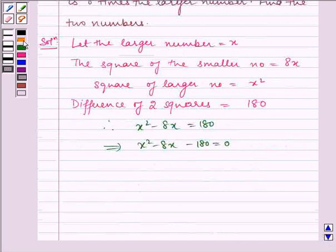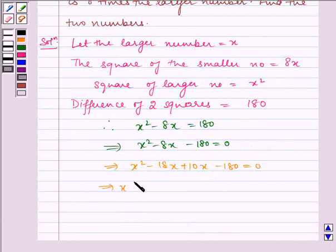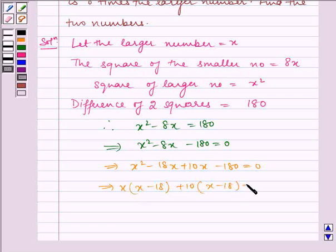Now splitting the middle term we get x square minus 18x plus 10x minus 180 is equal to 0. Which implies x taking common x minus 18 plus 10 taking common x minus 18 which is equal to 0.